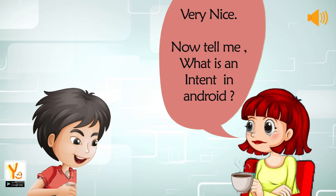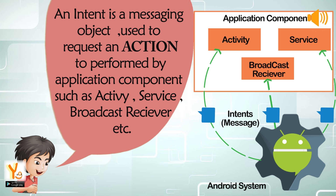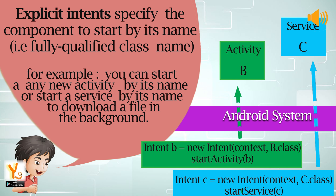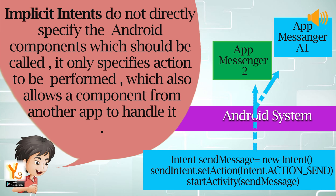The interviewer asked: What is an intent in Android? Raj replied: An intent is a messaging object used to request an action to be performed by an application component such as Activity, Service, or Broadcast Receiver. Explicit Intents specify the component to start by its name — the fully qualified class name. For example, you can start a new activity by its name or start a service to download a file in the background. Implicit Intents do not directly specify the Android component; they only specify the action to be performed, which allows a component from another app to handle it.